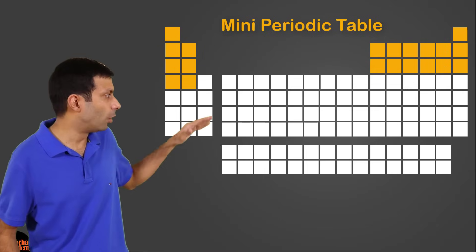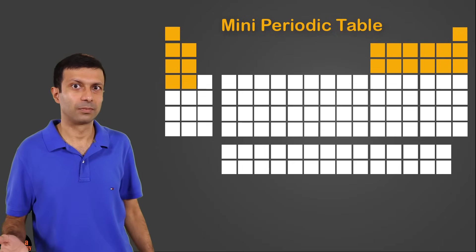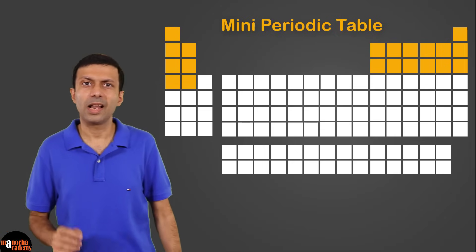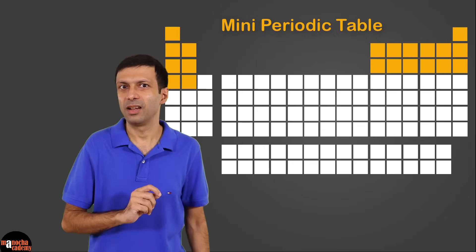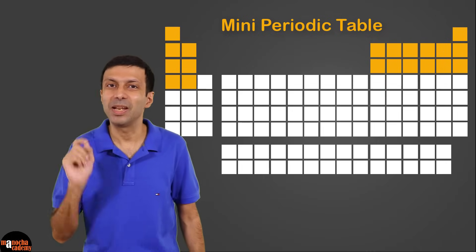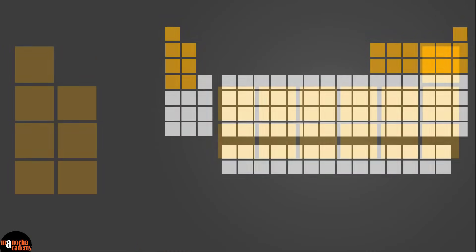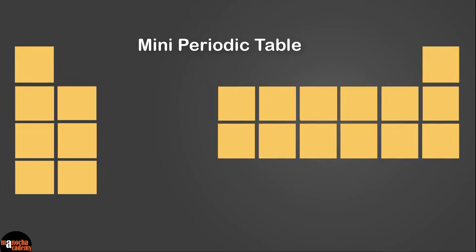We will talk about the lower rows later on in this video. I would like you to pause the video here and go ahead and sketch our mini periodic table in your notebook. Just draw this blank table till the fourth row. You can also pause the video here and take a printout of the blank table.